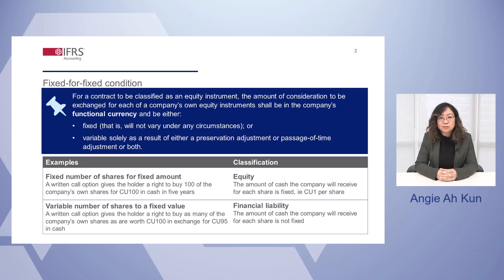The focus is on the certainty over the exchange or conversion ratio at inception of the derivative. In other words, the amount of consideration exchanged per share must be fixed in the same way that it would be fixed if the company had issued the underlying shares for cash instead.